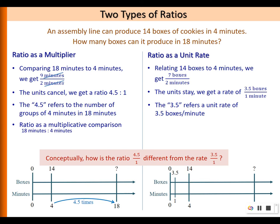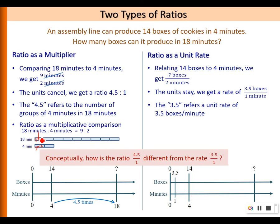For ratio as a multiplier, it's essentially a multiplicative comparison — we are comparing 18 minutes to 4 minutes. Using a strip diagram, 18 minutes is to 4 minutes as 9 is to 2. If 4 minutes has 2 parts, then each part is 2 minutes. For 18 minutes, you will have 9 parts of 2 minutes.